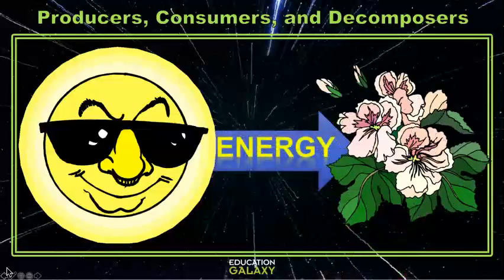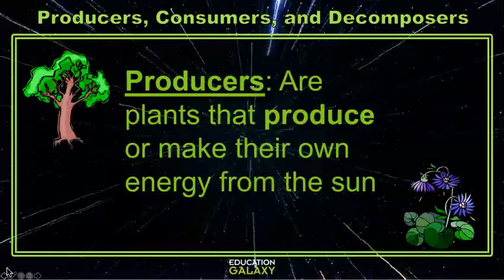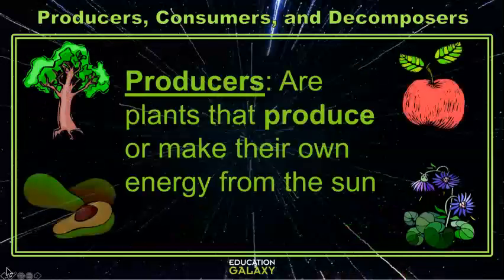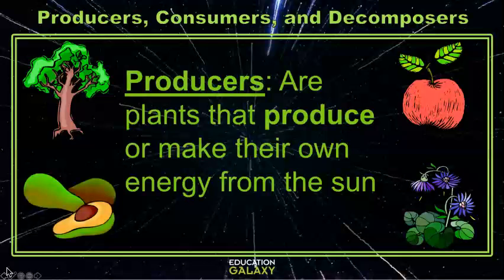The sun's energy is used by plants, or producers, to make and produce their own energy. Plants use a process called photosynthesis to convert sunlight, carbon dioxide, and water into energy.